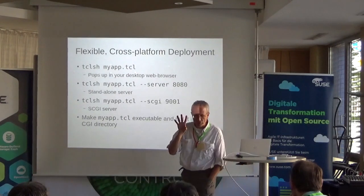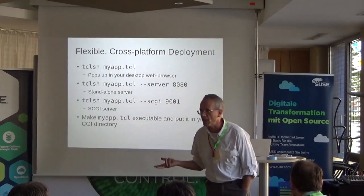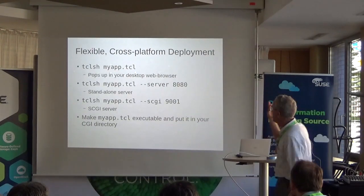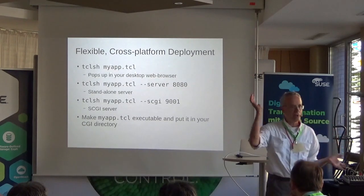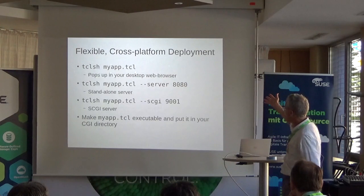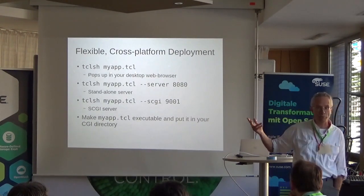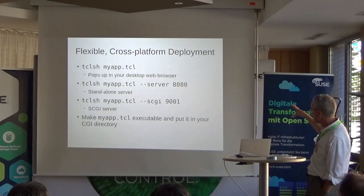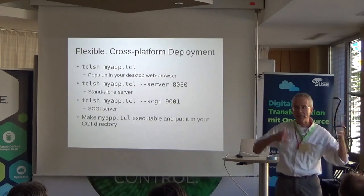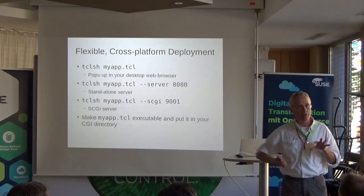One of the key features is cross-platform. Right now when you develop a web application, the first thing you need to do is decide where you're going to run it, and once you make the decision you're kind of locked in. With WAP, if you just type TCL shell and the name of the application, it automatically pops up in a web browser on your desktop — great for development. Then you can deploy it as a standalone server by giving it a TCP port, or via SCGI, or just make the script an executable file in your CGI directory. You can do the same application in all these contexts, making it really easy to debug on your desktop and then SCP it over to your web server.